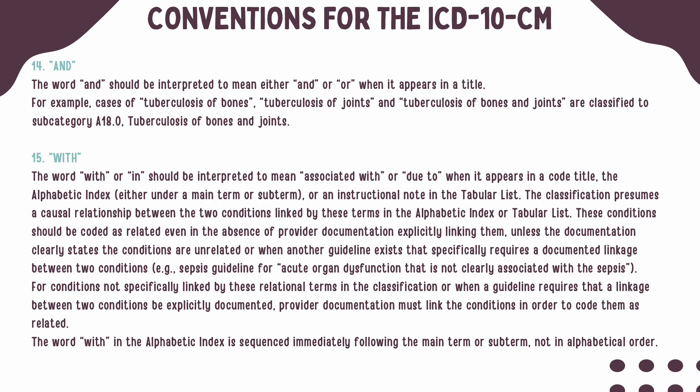When the word 'and' is found, it should be interpreted to mean 'and' or 'or.' Subcategory A81.0 is titled tuberculosis of bones and joints. This subcategory can be used when you have either tuberculosis of bones, tuberculosis of joints, or both tuberculosis of bones and joints.